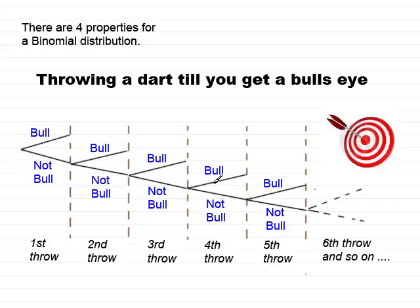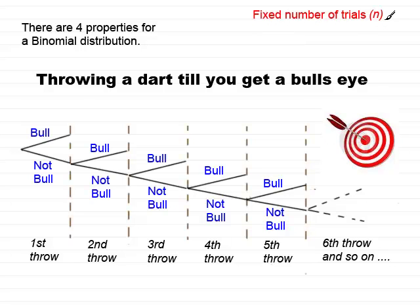It would have what we call an infinite number of trials. Trials are these sections in between the dotted lines here — they represent in this particular example the first throw, the second throw, third throw, and so on. So what is the first property for a binomial distribution? Well, it is that we have a fixed number of trials n. This particular model would not fit a binomial distribution because it has an infinite number of trials.